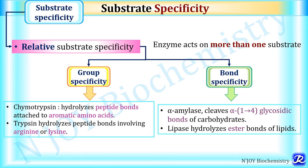Relative substrate specificity is thus of two types: group specificity (e.g., chymotrypsin and trypsin, important in protein digestion) and bond specificity (e.g., amylase for carbohydrate digestion, lipases for lipid digestion).